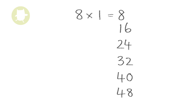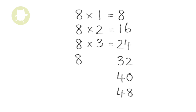This can be calculated by multiplying 8 by 1. The second multiple of 8 is 16. This can be calculated by multiplying 8 by 2. The next multiple of 8 is 24. This can be calculated by multiplying 8 by 3. The fourth multiple of 8 is 32. The fifth multiple of 8 is 40. This can be calculated by multiplying 8 by 5. The sixth multiple of 8 is 48.